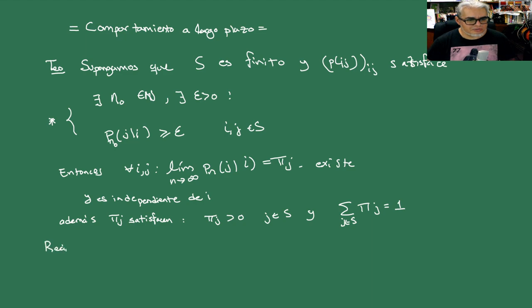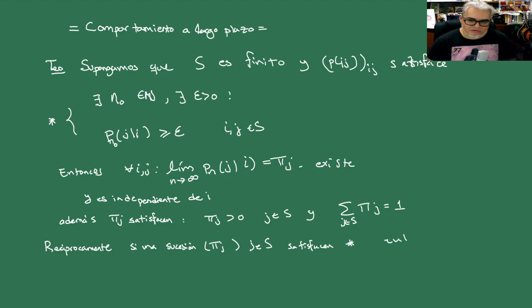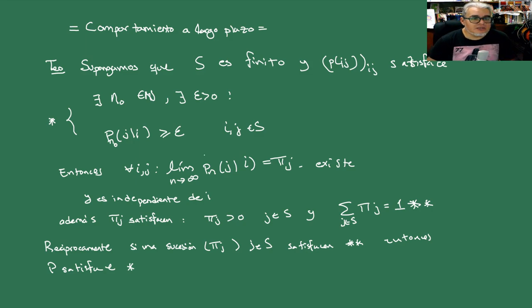Recíprocamente, si una sucesión de números π_J con J en S satisface estas condiciones —que les vamos a poner doble estrellita (**)— entonces la P asociada satisface la estrellita. Vamos a hacer la prueba y a ver si alcanzamos a hacer el recíproco. Vamos a hacer la parte I.